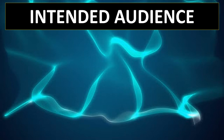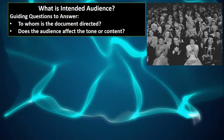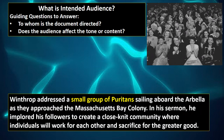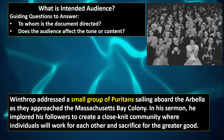Number two: intended audience. To me this one's a little bit easier, but a lot of times students tend to forget it and skip it over. What is intended audience? To whom is the document directed? Does the audience affect the tone or content of the document? For the Winthrop quote: 'Winthrop addressed a small group of Puritans sailing aboard the Arbella as they approached the Massachusetts Bay Colony. In his sermon, he implored his followers to create a close-knit community where individuals work for each other and sacrifice for the greater good.'